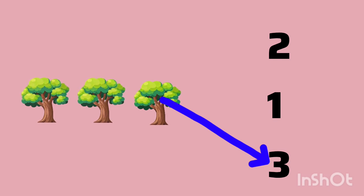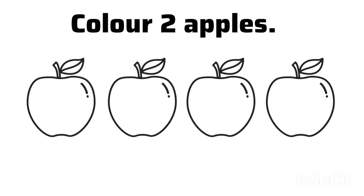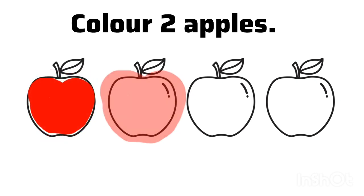Now next, color 2 apples. Here you can see some apples. From this, you have to color 2 apples. So let's do coloring. 1 apple coloring. 2 apple coloring.